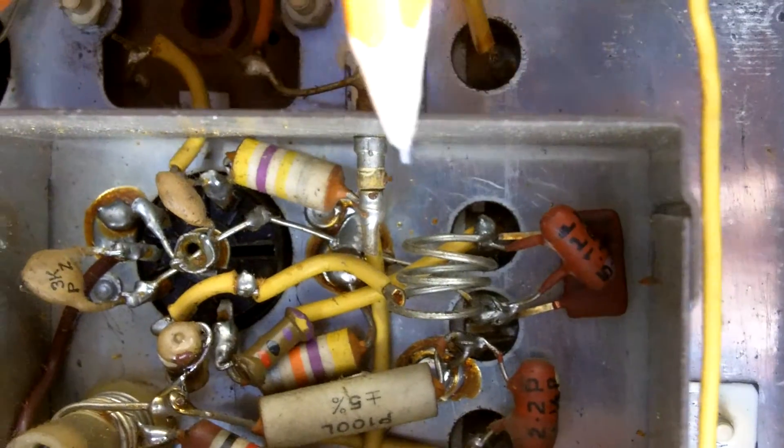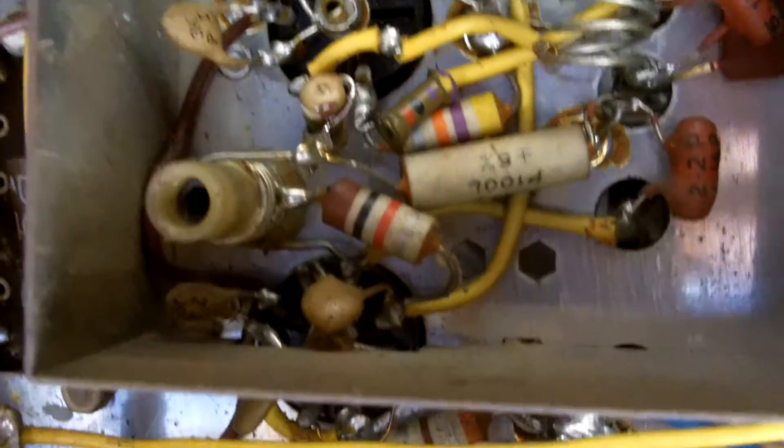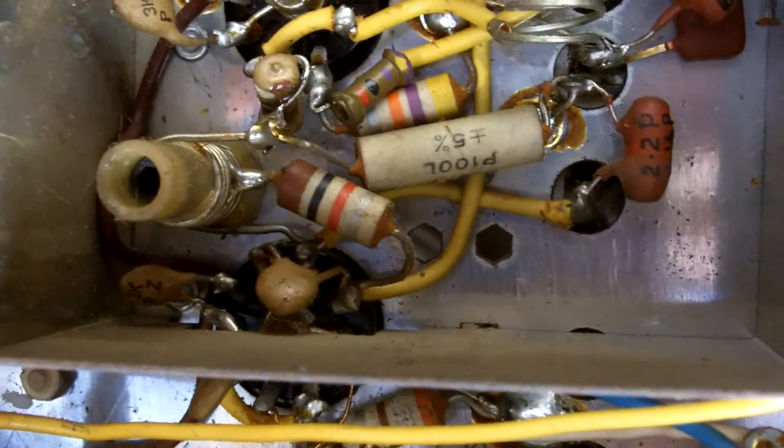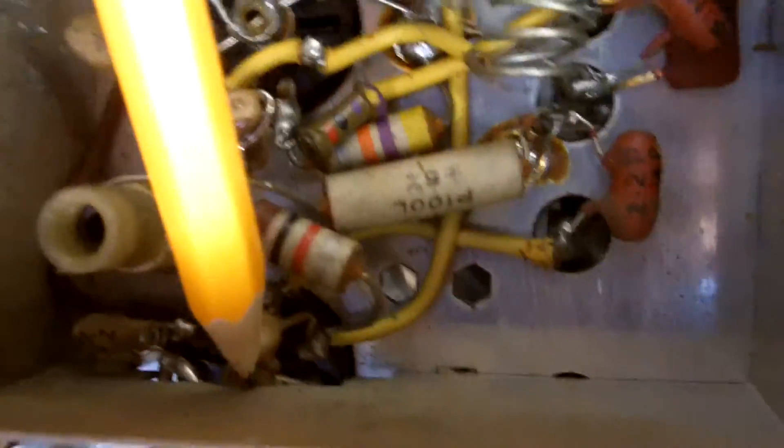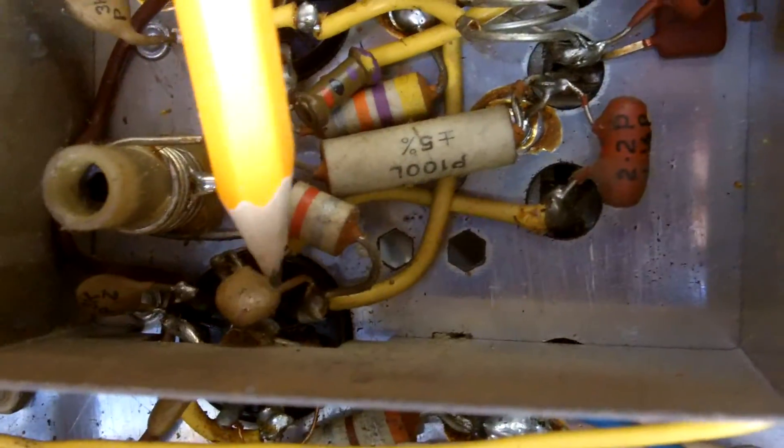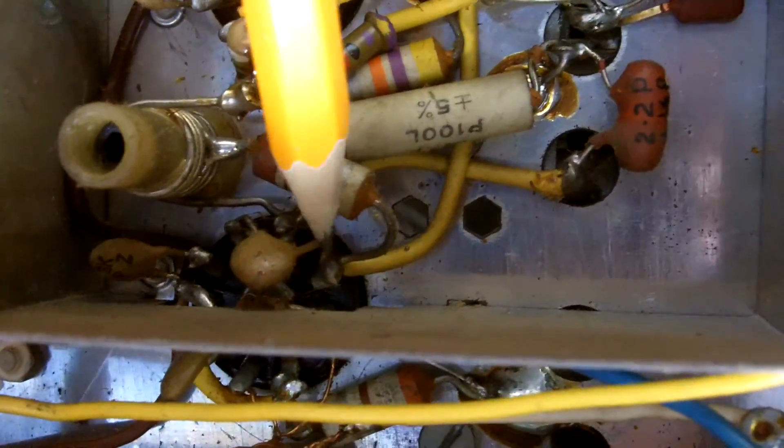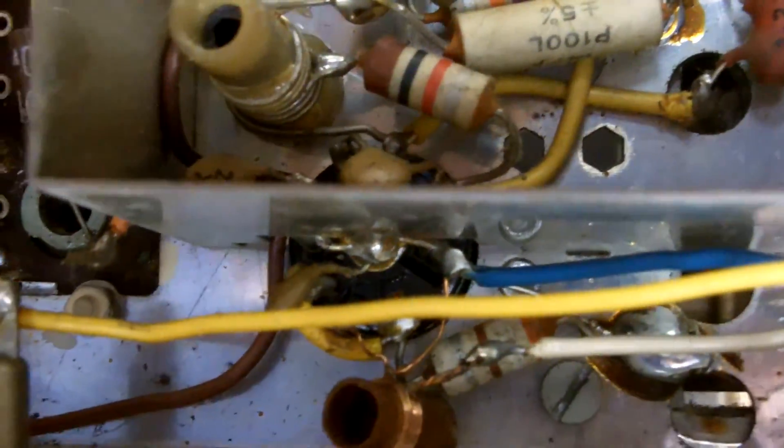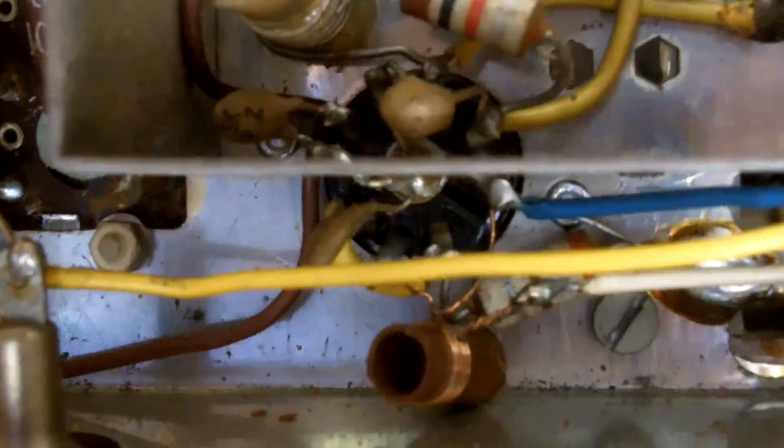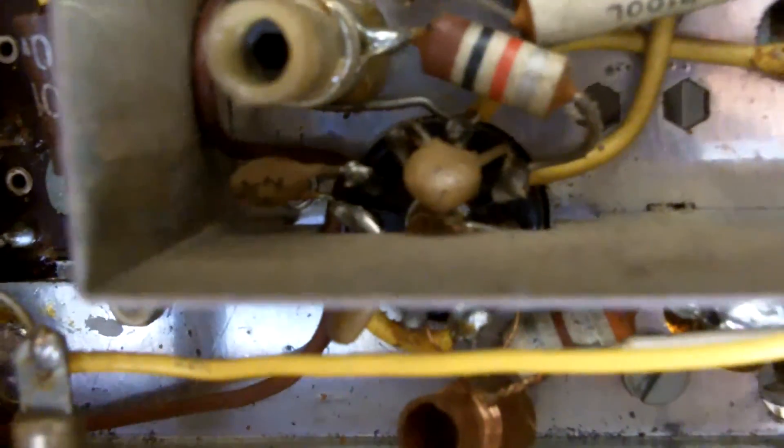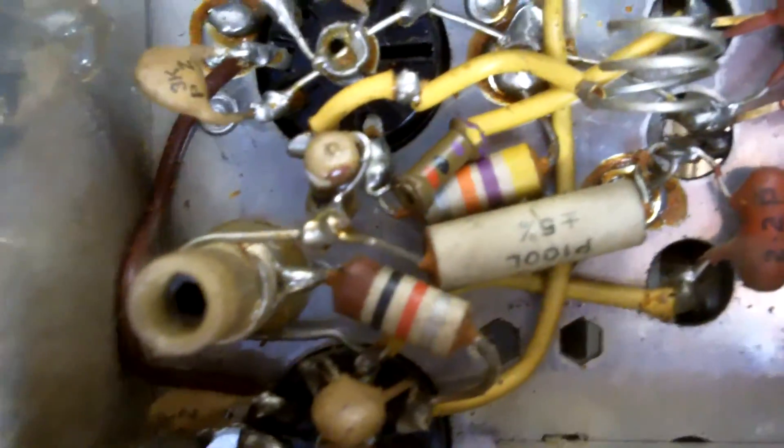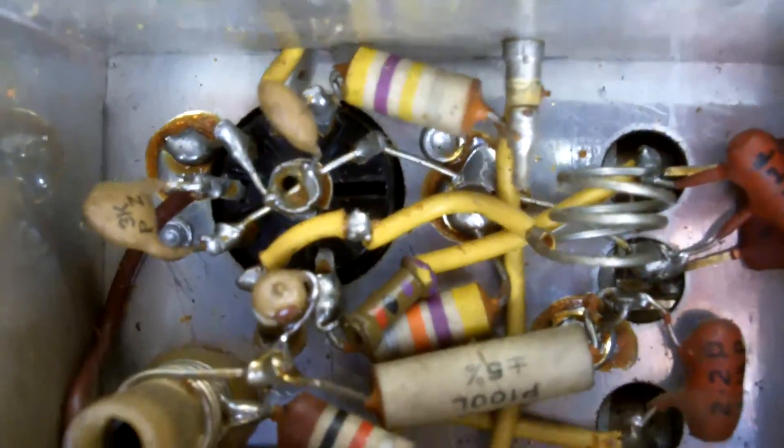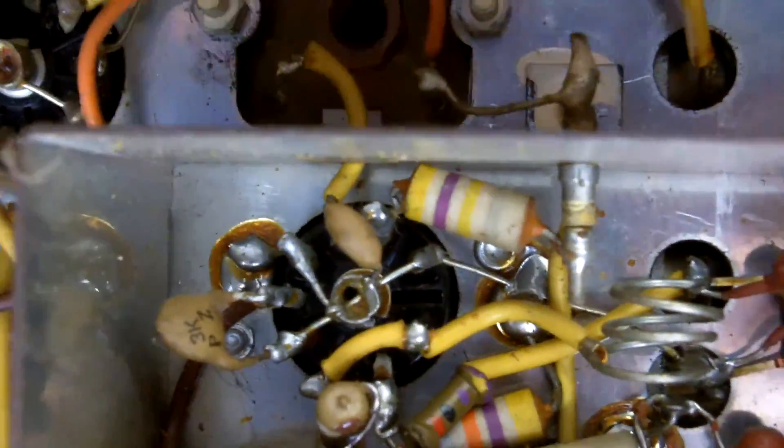So here we've got the metal screen that I talked about. This is the valve base for V1. You can see the manufacturer has arranged to have half of the valve inside the VHF screen and half of it outside. I won't go into that now, but it's an interesting thing for you to look at.